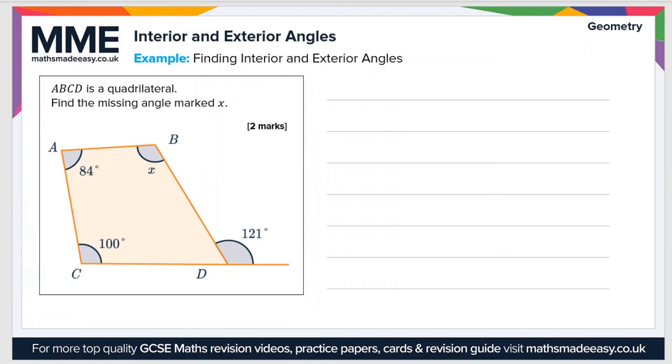So if we have a look at an example question now: ABCD is a quadrilateral. Find the missing angle marked x. Now there's two missing angles, so first of all let's work out this bottom one here, we'll call it y.